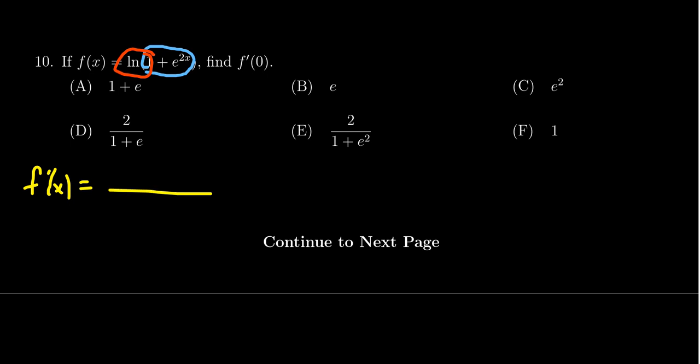we see the derivative is going to look like 1 plus e to the 2x on the bottom, and in the numerator, we get (1 plus e to the 2x)'. So we have to take the derivative of the top.